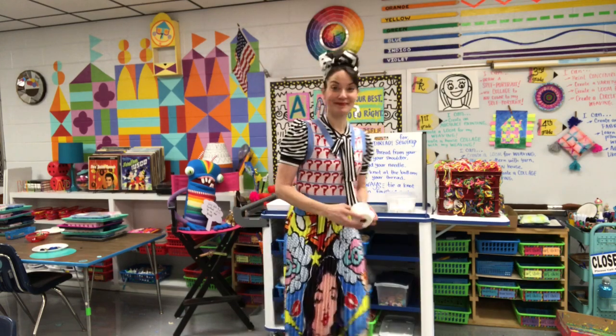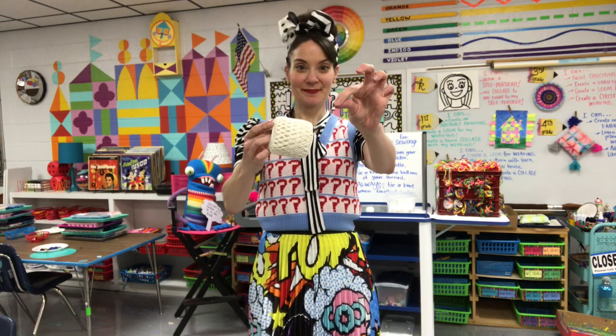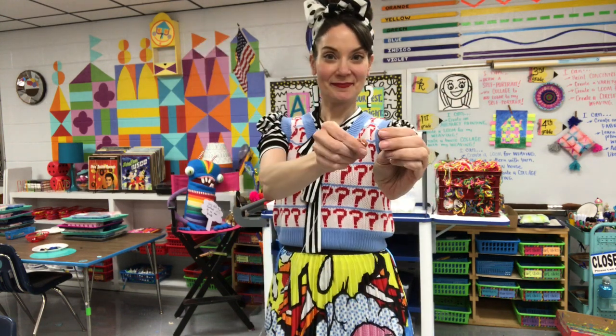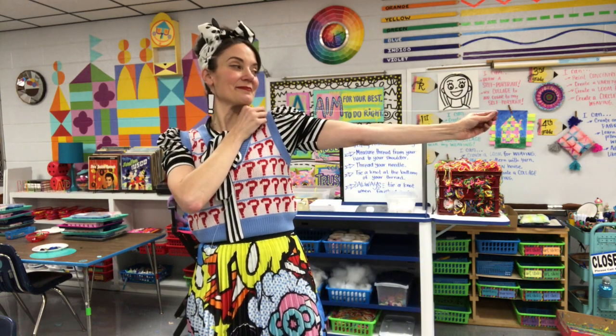Let's get started with stitching. The first thing you're going to need is thread. I have two different kinds. It doesn't really matter which one you pick, they're both the same. Unwind the thread. You're going to take the end of the thread, pull it and then stretch it until you reach your shoulder.